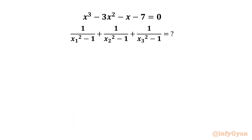The cubic x³ minus 3x² minus x minus 7 equals 0 is a known equation whose roots are x1, x2, x3. We need to evaluate 1/(x1² - 1) plus 1/(x2² - 1) plus 1/(x3² - 1).